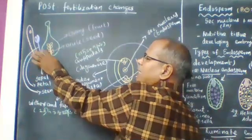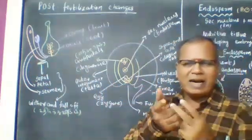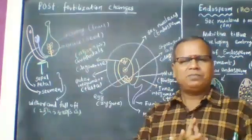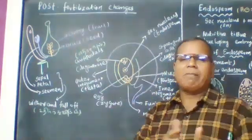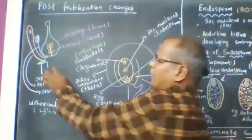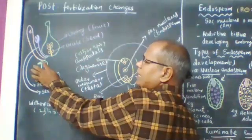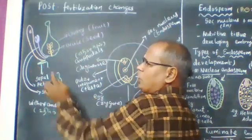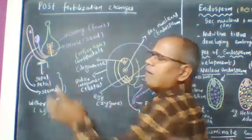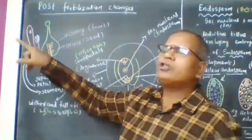The unit of calyx is the sepal, the unit of corolla is the petal, and the unit of androecium is the stamen.